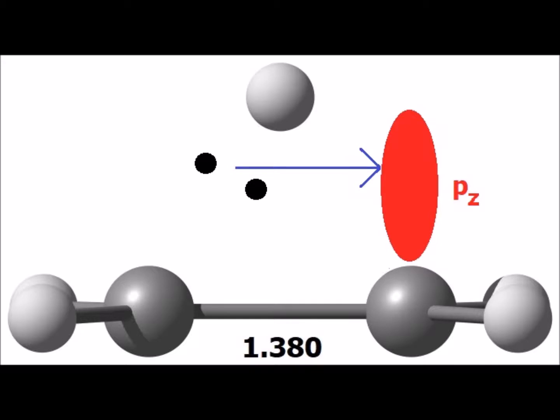This bonding pair can be donated into the empty pz orbital on the right-most carbon atom. This interaction is called hyperconjugation, and it accounts for the fact that primary carbocations are more stable than methyl carbocations. Since in the methyl carbocation, there is not a carbon-hydrogen bond that can donate electrons into the empty pz orbital on the carbon of the carbocation.